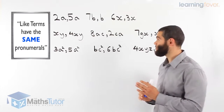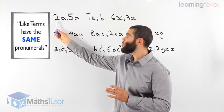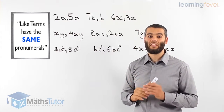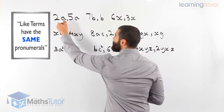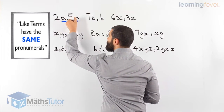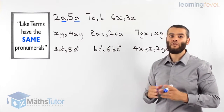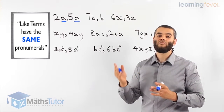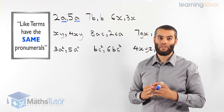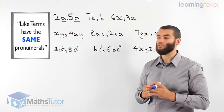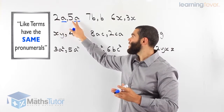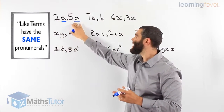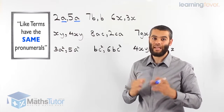Let's see what like terms are. We have 2a and 5a. Are they like terms? The answer is yes, because they have the same pronumeral — a and a. I like to tell students to think of it this way: two apples and five apples. You can add them up. A for apples. So 2a and 5a are like terms, meaning you can add them up.